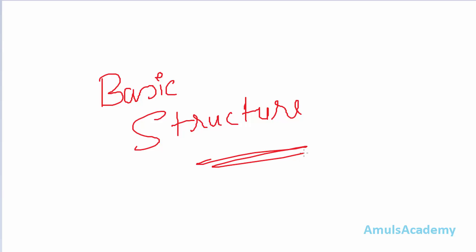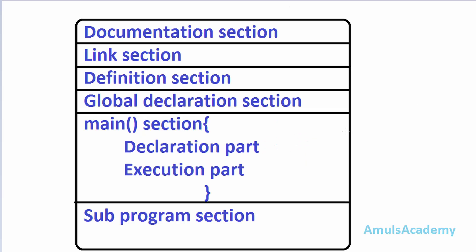In the basic structure of C, there are different sections. These are: the documentation section, the link section, the definition section, the global declaration section, and the main section — which contains a declaration part and an execution part. Finally, there is the sub-program section. We will discuss all of these sections in detail.